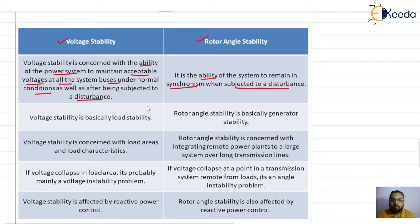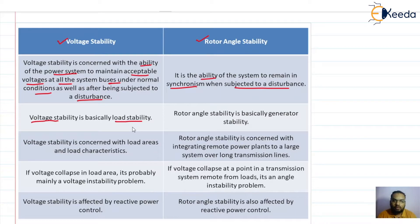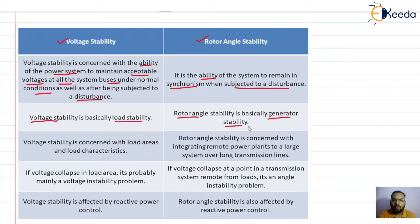Voltage stability is basically driven by load characteristics, which is why it is also called load stability. Rotor angle stability is basically called generator stability. Both these terms are used interchangeably in power system terminology — rotor angle stability and generator stability are used interchangeably, as are voltage stability and load stability.